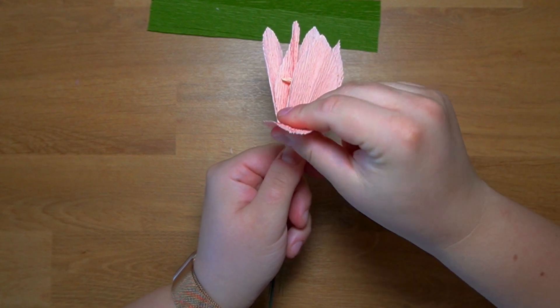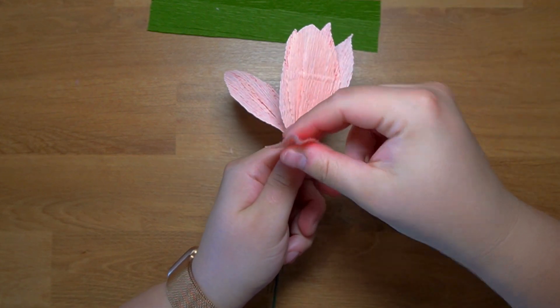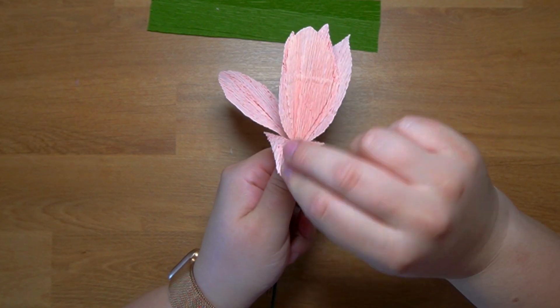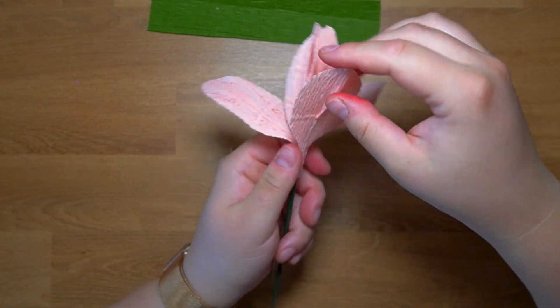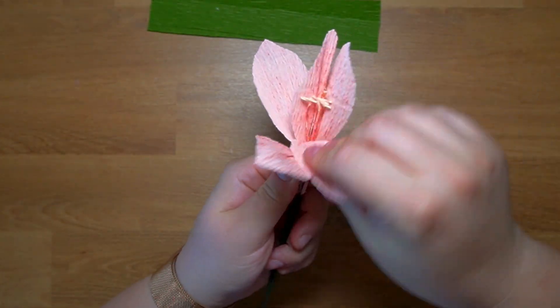Once the glue is cooled off, you can start working the petals in order to get the amaryllis to have that nice shape of a flower.